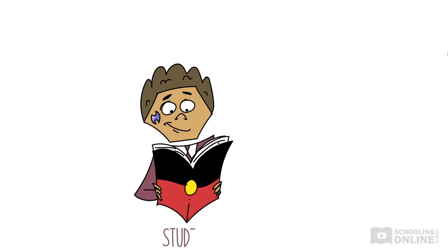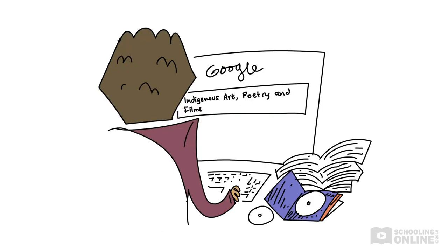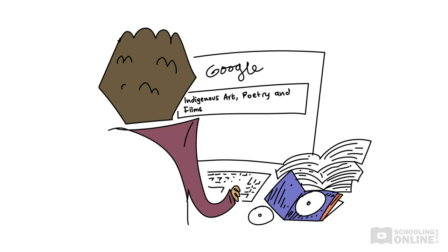If you are studying an Australian set text, be on the lookout for anything related to Aboriginal storytelling traditions. Also, when you hunt down a related text, you might want to research some Indigenous art, poetry or films.